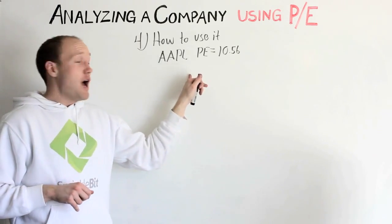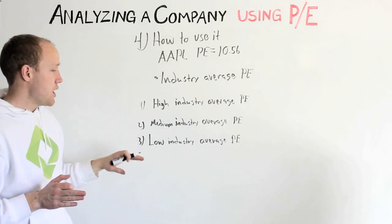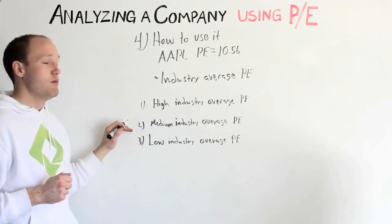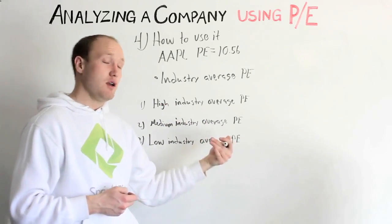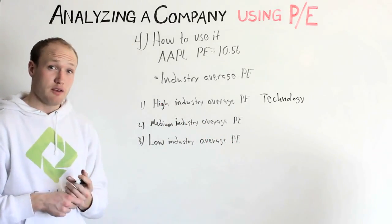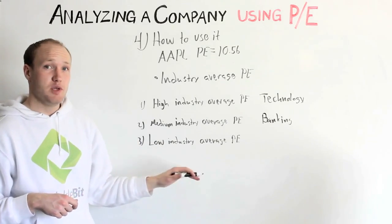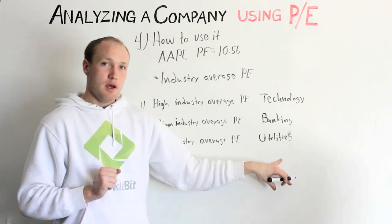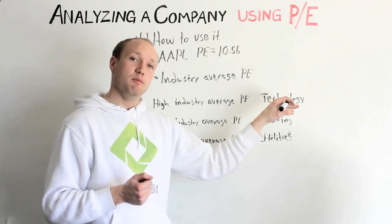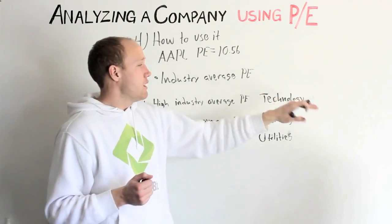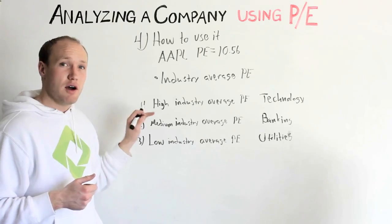Now that we have Apple's PE at 10.56, how do we use this number? You can have low, medium, or high industry average PE, and this is correlated to the expected growth of the industry as a whole. A good example for high industry PE is technology. A good example for medium industry average PE is banks. And a good example of low industry average PE is utilities — for example, paying your electric bill. Low expected growth means low average PE. Technology has a higher expected growth than both banking and utilities, so it has a higher industry PE.